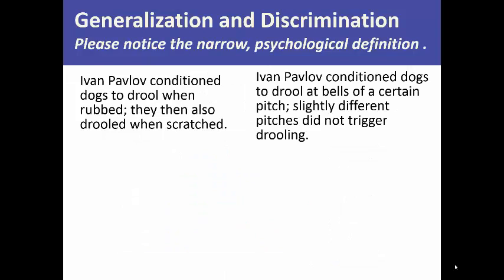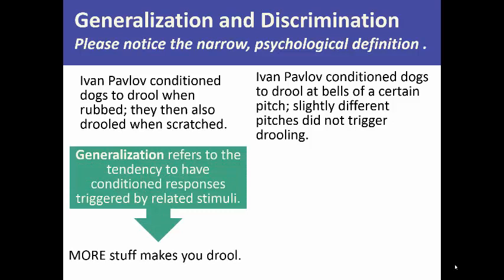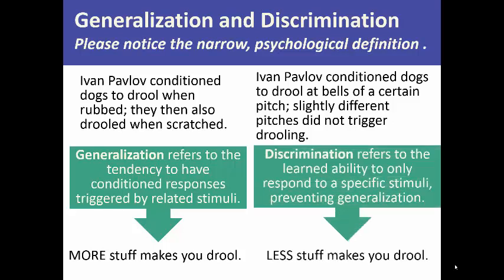Generalization and discrimination: Ivan Pavlov conditioned dogs to drool when rubbed, and also drool when scratched. He also conditioned dogs to drool at bells of certain pitch, and slightly different pitches did not trigger drooling. Generalization refers to the tendency to have conditioned responses triggered by related stimuli — the rubbing and scratching were similar enough that they elicited drooling, so more stimuli can make you drool. But discrimination refers to the ability to respond only to a specific stimulus, preventing generalization — less stuff makes you drool.